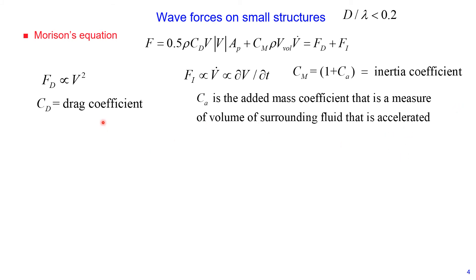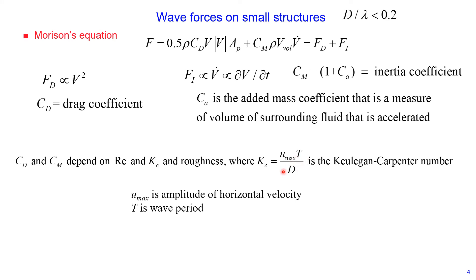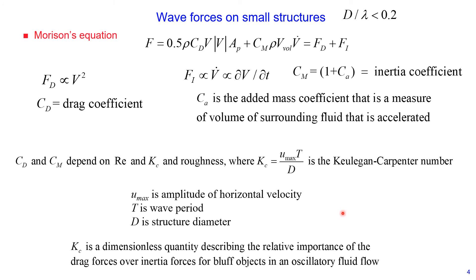Both drag and inertia coefficients depend on Reynolds number and also on a dimensionless number called the Keulegan-Carpenter number, and roughness. The Keulegan-Carpenter number is defined as the ratio of the product of maximum amplitude of horizontal velocity U-max, multiplied by wave period, divided by structure diameter D. This dimensionless number describes the relative importance of drag forces over inertia forces for bluff objects in oscillatory fluid flow.